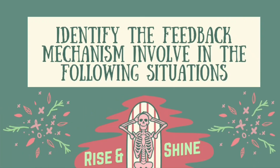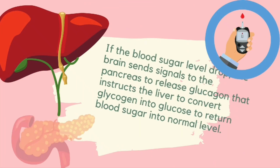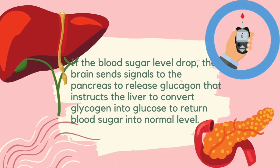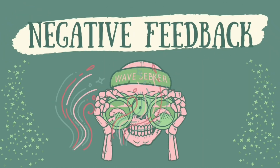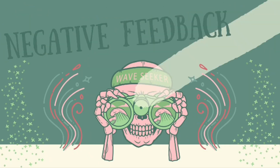Now let us identify the feedback mechanisms involved in the following situations. If the blood sugar level drops, the brain sends signals to the pancreas to release glucagon, which instructs the liver to convert glycogen into glucose to return blood sugar to the normal level. The answer is negative feedback.